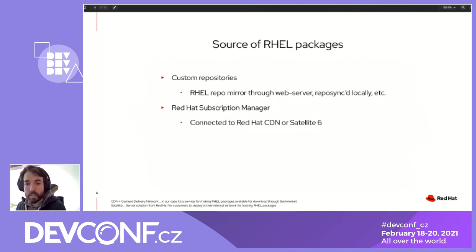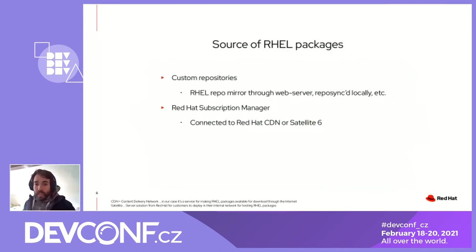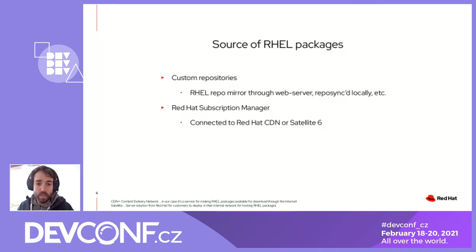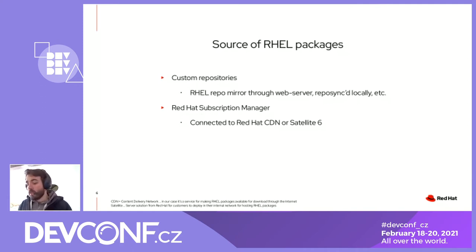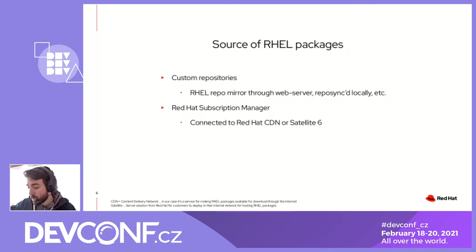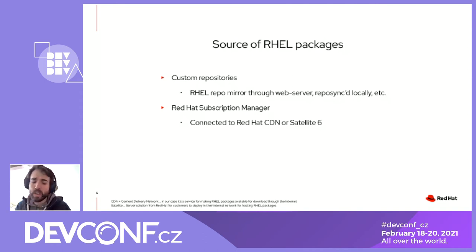So where does the tool take the Red Hat Enterprise Linux packages from? It depends what you choose. There are two possibilities. You can either use custom repositories — meaning it's your responsibility to get the RHEL repositories from somewhere. For example, you can download the DVD ISO image and mount it, or you may have a RHEL system already installed that has access to the RHEL repos, and you can repo-sync them and copy them to have them available locally on the CentOS system, or make them available through a web server or FTP server.